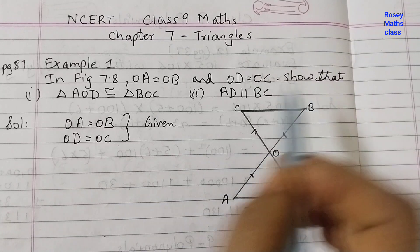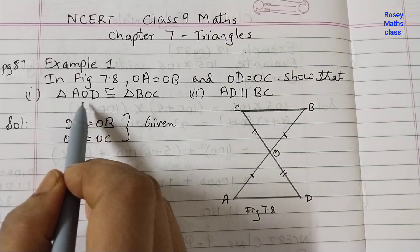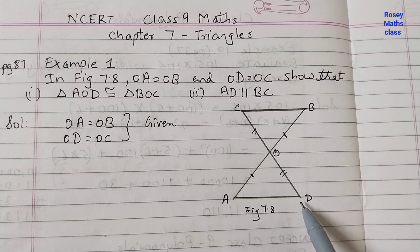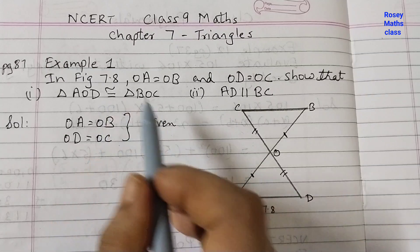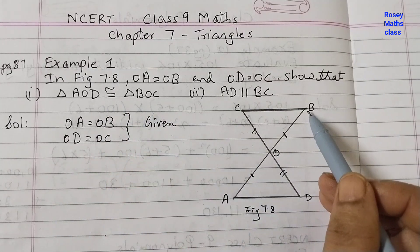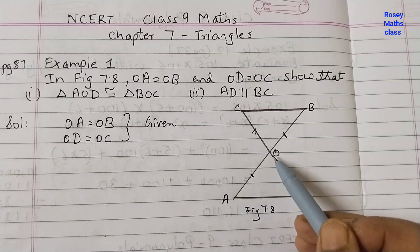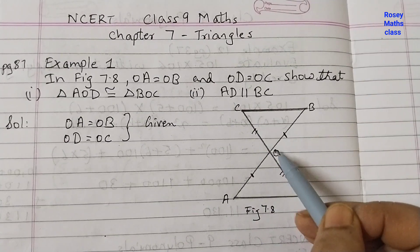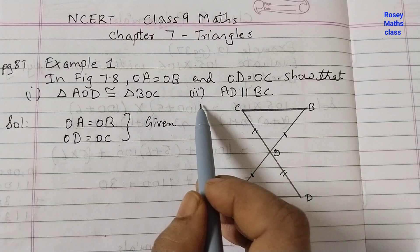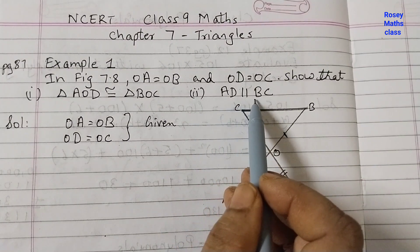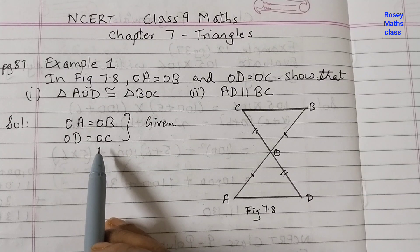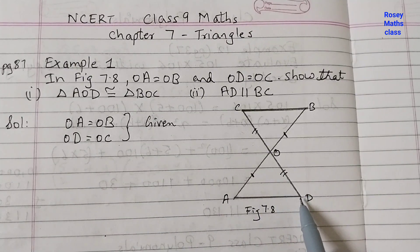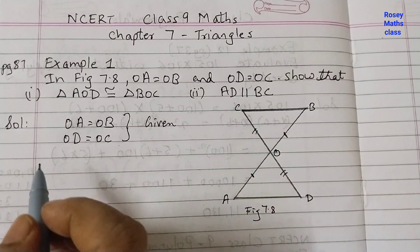We need to show that triangle AOD is congruent to triangle BOC — this symbol is the congruence symbol — so AOD is congruent to BOC. The second part is to show AD is parallel to BC. This is what we need to prove.